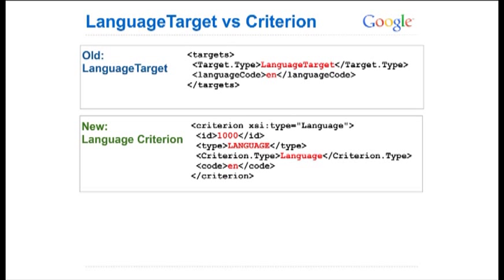Note that when you send this XML to the API in order to create a new criterion, you don't actually have to send the vast majority of these fields. All you really have to send is the XSI type and the ID.